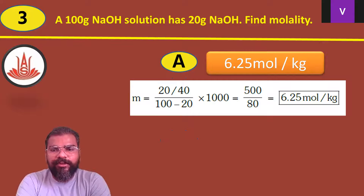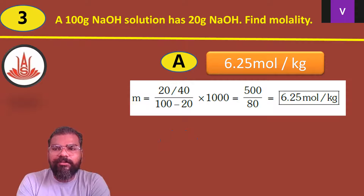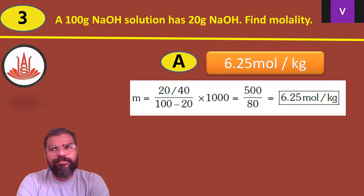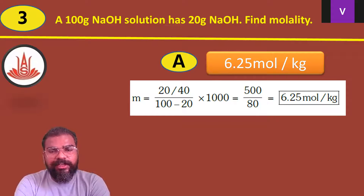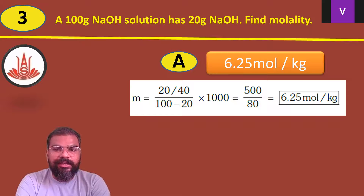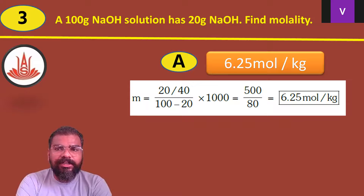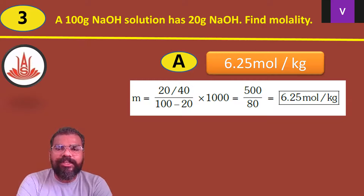Option A, 6.25 mol/kg, is the correct answer. Using the same formula: molality = (20 ÷ 40) ÷ [(100 − 20) ÷ 1000] = 0.5 × 1000 ÷ 80 = 500 ÷ 80 = 6.25 mol/kg.